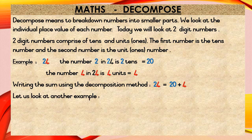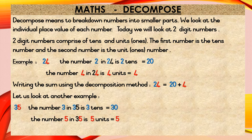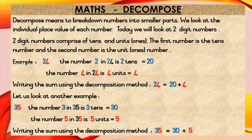Let us look at another example. 35. The number 3 in 35 is 3 tens, which is equal to 30. The number 5 in 35 is 5 units, which is equal to 5. Writing the sum using the decomposition method: 35 is equal to 30 plus 5.